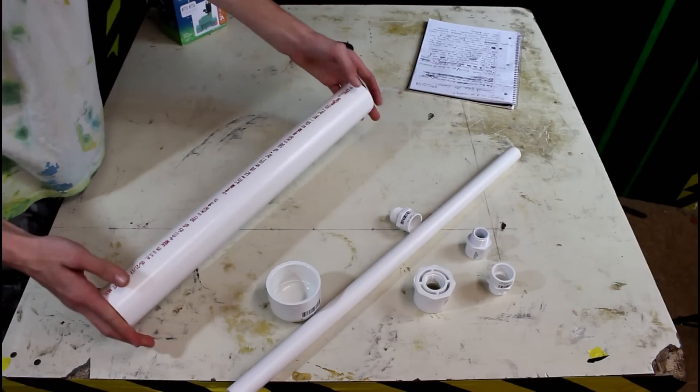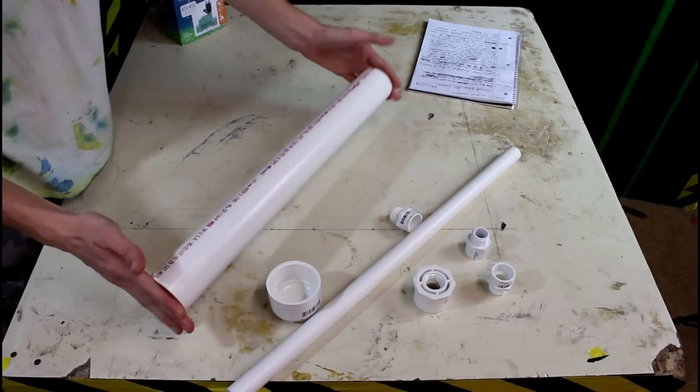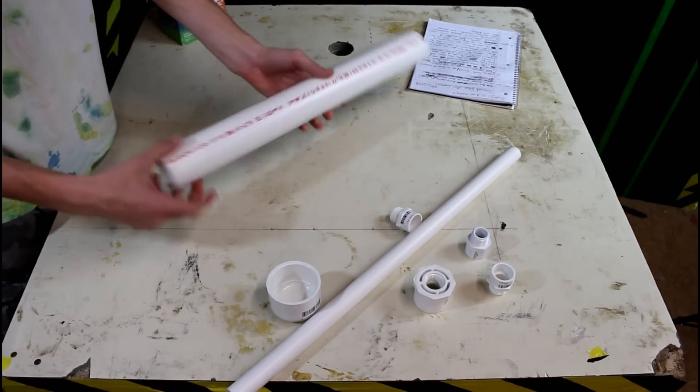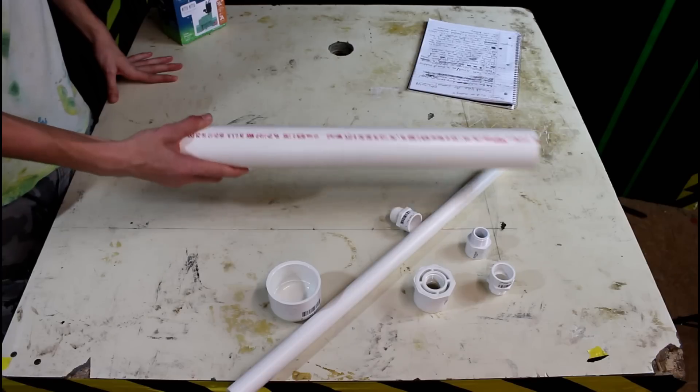I went out to the store and bought a two-foot section, well it was two-foot. I cut about four inches off, so this is now a 20-inch piece of two-inch diameter PVC pipe. This is going to be my air tank.